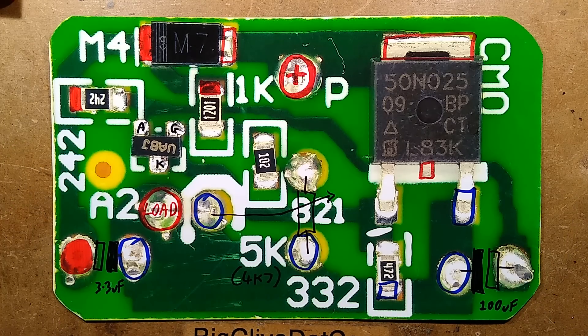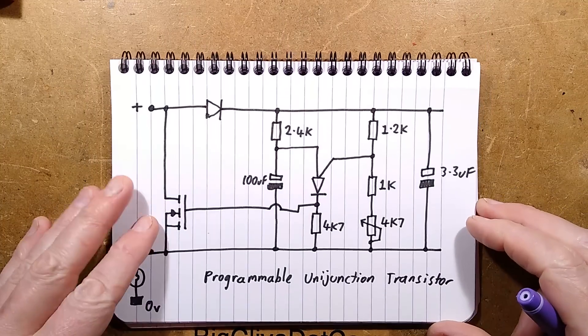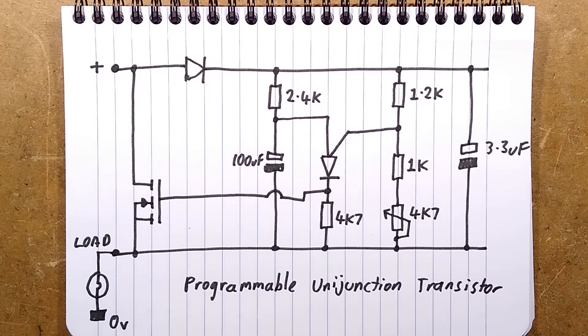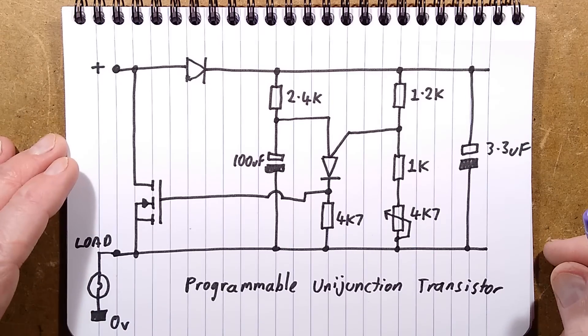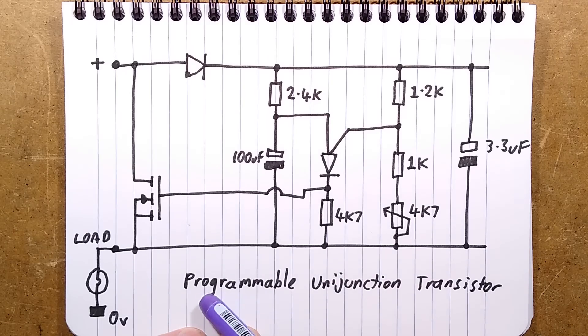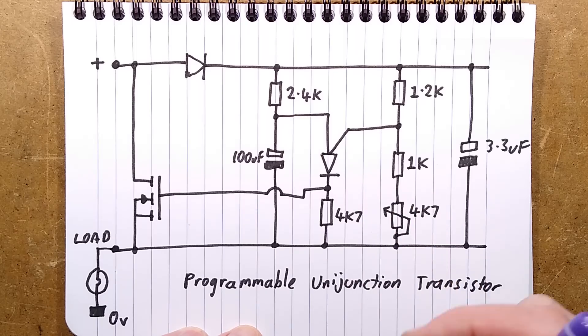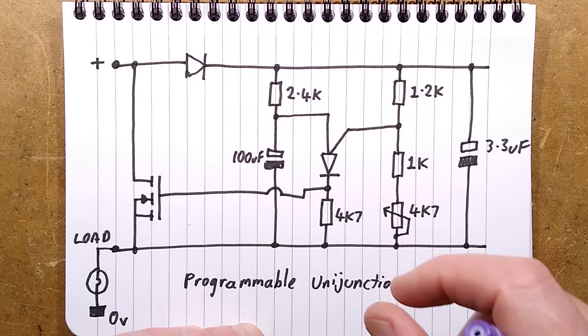Here is the schematic. I've put a programmable unijunction transistor here. It's something you may want to look up, it's an oddity. The first time I came across these was in fairground DC controllers providing a clock pulse. They're used for triggering thyristors because they can fire quite high current pulses.